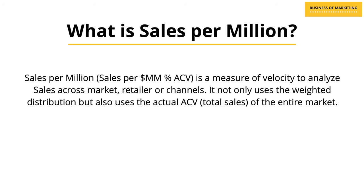The obvious next question is: what measure should one use when making comparisons across different markets? This is where sales per million comes into play. Sales per million, or sales per million percentage ACV, is a measure of velocity to analyze sales across markets, retailers, or channels. It not only uses weighted distribution but also uses the actual ACV — the total sales of the entire market. Sales per million is calculated by dividing sales by percentage ACV distribution, multiplied by sales per million dollars or market ACV. Another way to think about it is: how much of my product is actually being sold per million dollars of total market sales?